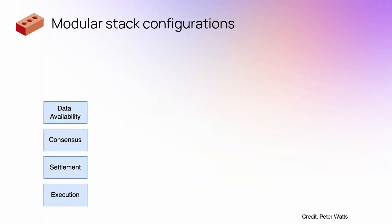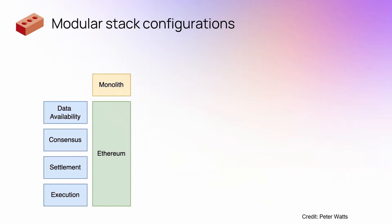As I mentioned, there are these four components: data availability, consensus, settlement, and execution. So you have monolithic blockchains, like Bitcoin or Ethereum as it is traditionally, where you basically have a general purpose smart contract environment, and the validators and the full nodes handle all of those four components.